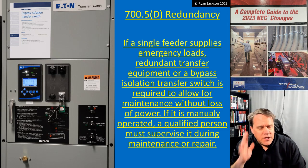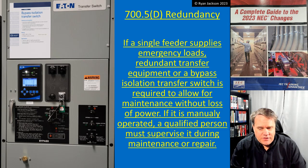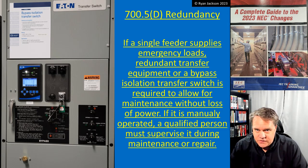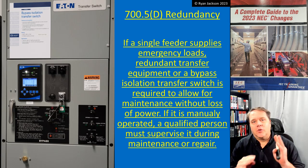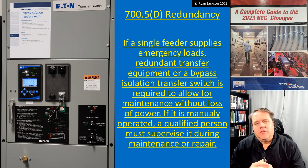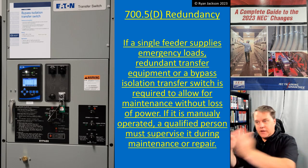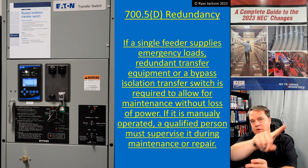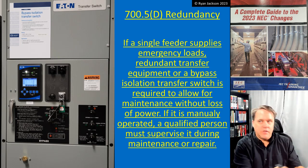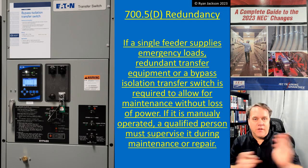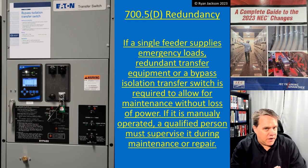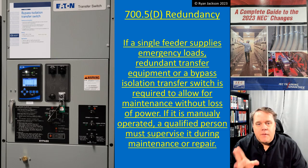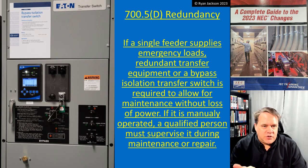We need people to maintain things and we need the emergency system to remain operational while we're doing it. So how do we do both at the same time? We either install a second transfer switch — use one while maintaining the other — or if we don't want to buy two, buy a bypass isolation transfer switch.